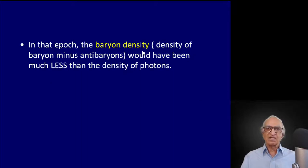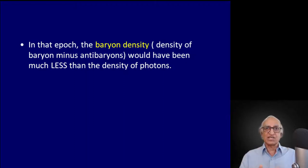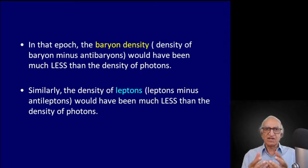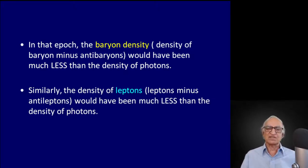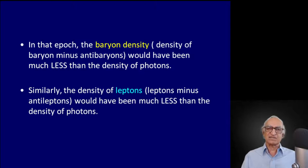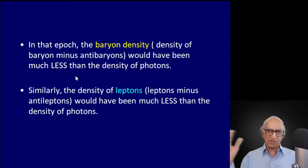In that epoch, the baryon density — the number of baryons minus the number of antibaryons — must be very much less than the number of photons. Similarly, the number density of leptons minus antileptons would be very much smaller than the number density of photons. We know in the universe there are protons, neutrons, electrons — but why there is an asymmetry, why there are more particles than antiparticles, is a mystery we still haven't solved. There have been conjectures about that; we will come to that in a later lecture.